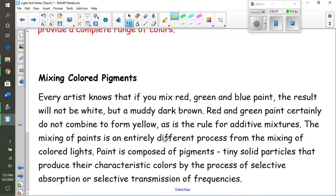Now we can talk about mixing pigment. So this is more of what the artists - if you want to be a painter - every artist knows if you take red paint, green paint, and blue paint and mix them together, you're not going to get white paint. It's going to be a muddy dark brown. Red and green paint certainly do not combine to form yellow, as is the rule for additive mixtures.